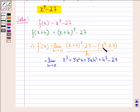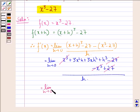Now this is minus x cube minus minus plus 27, the whole divided by h. Now we see that x cube gets cancelled and plus 27 gets cancelled, and we have limit h approaching 0, 3x square h plus 3x h square plus h cube divided by h.